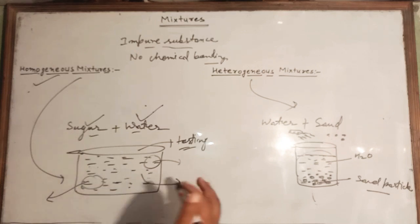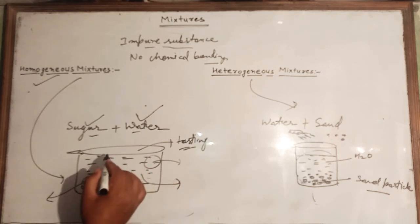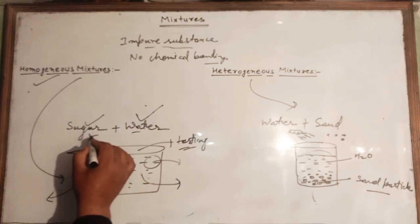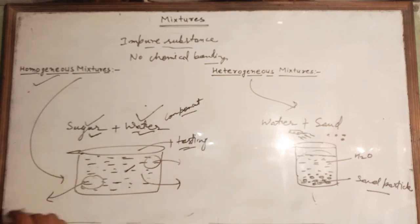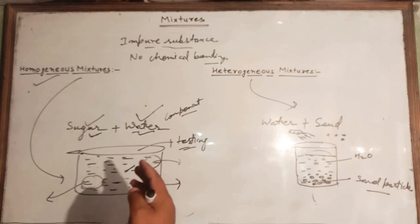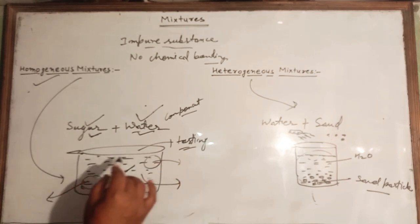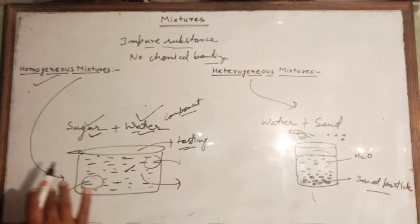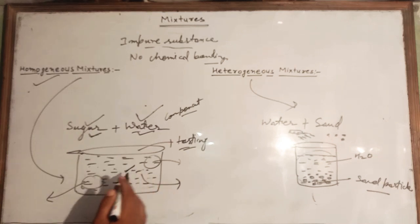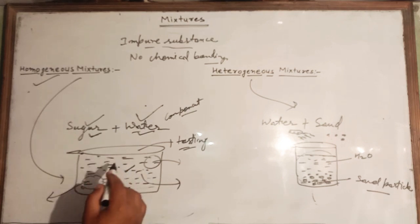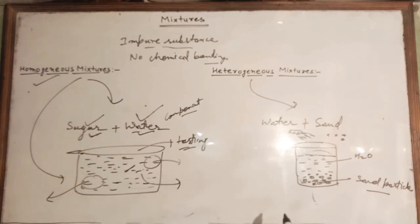So we can define homogeneous mixtures as mixtures in which the constituent particles — also called components, such as sugar and water — are uniformly distributed throughout the volume and cannot be recognized separately by seeing. That type of mixture is called a homogeneous mixture.